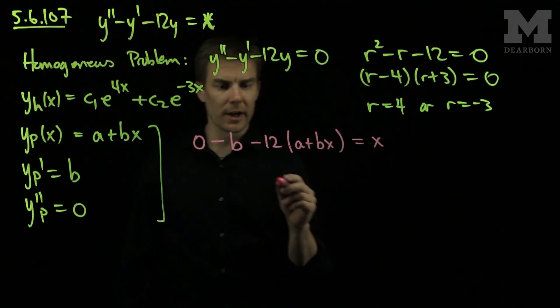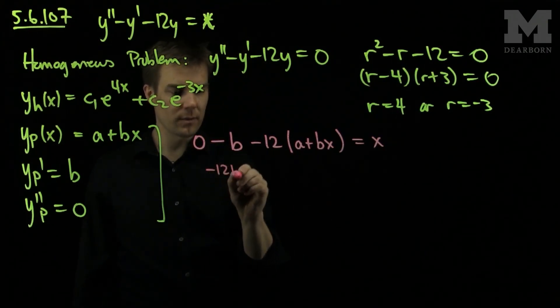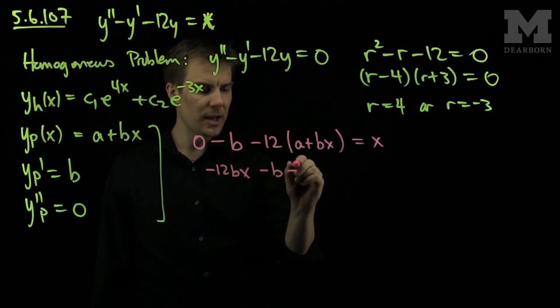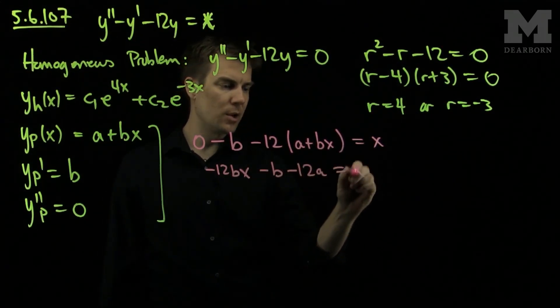Now we gather like terms. So I will have negative 12bx and then negative b, negative 12a should be equal to x.